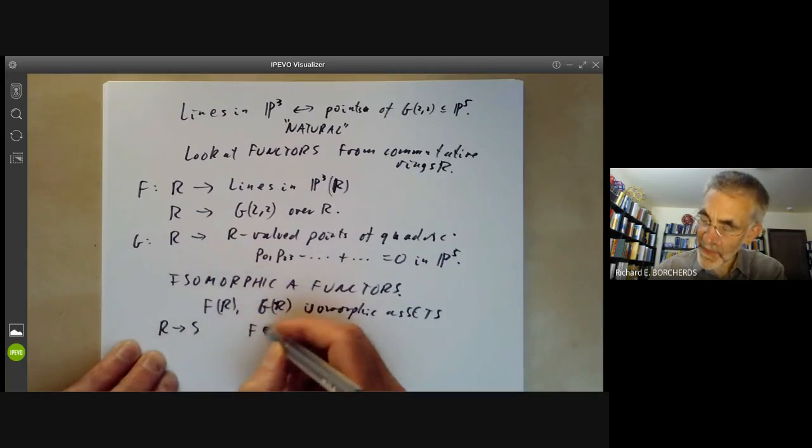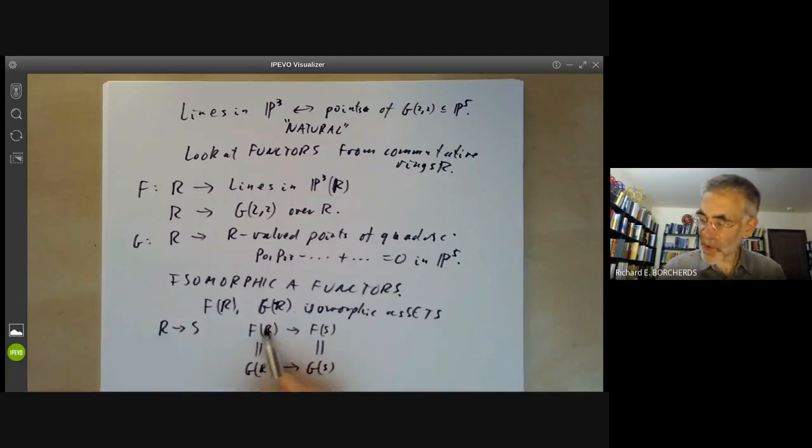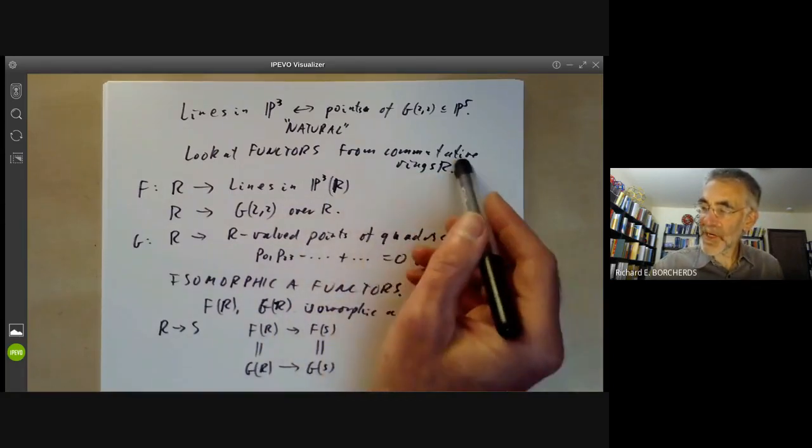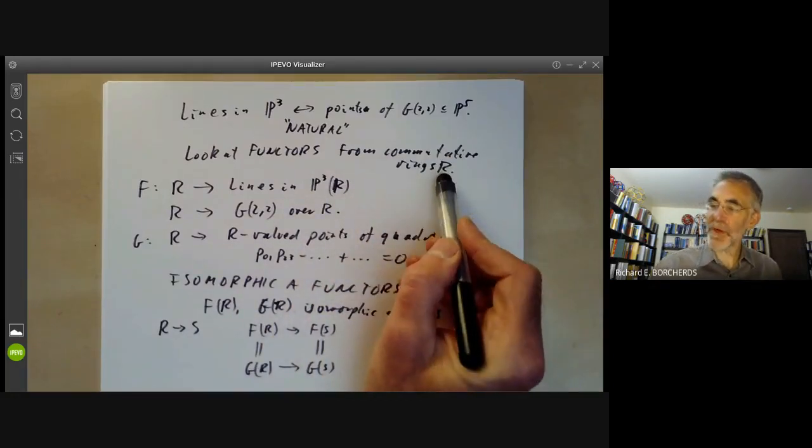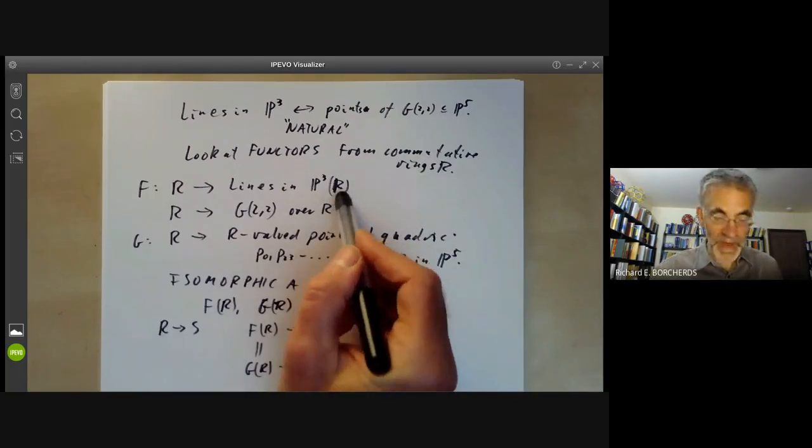Then we've got maps F(R) to F(S), and F(R) is isomorphic to G(R), and we've got a map from G(R) to G(S), and these are isomorphic. And the point is all these diagrams here should commute. So in order for this to make sense, you need to work with general commutative rings R, it's not really enough to work just for projective space over fields.